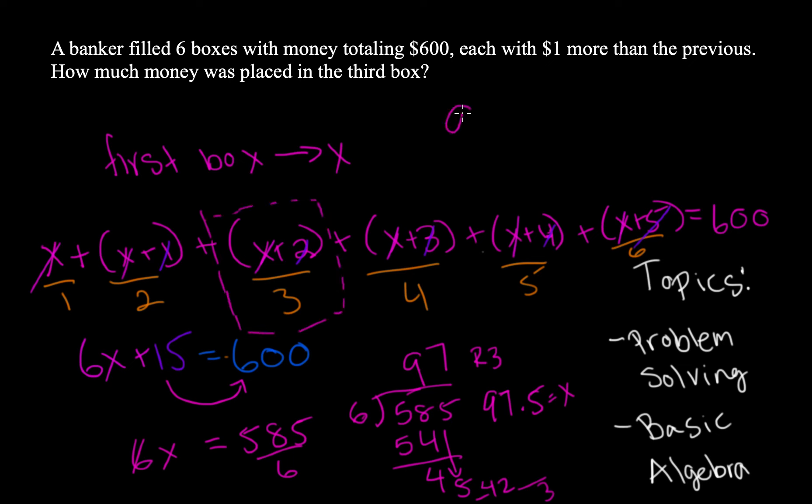So we need to say 97.5 plus 2 is equal to 99.5 or $99.50. And that is our final answer.